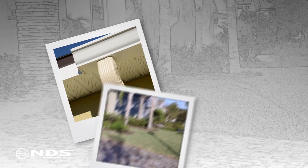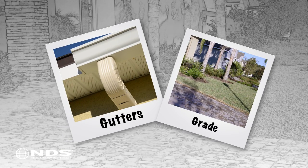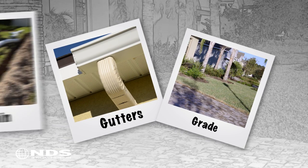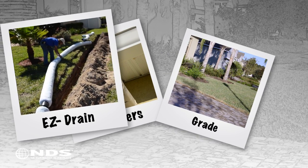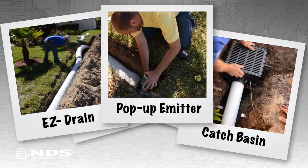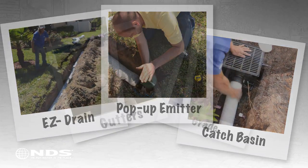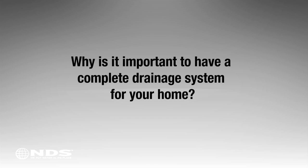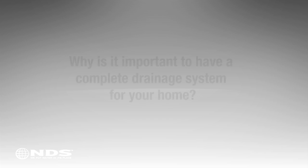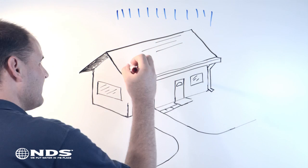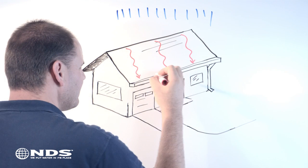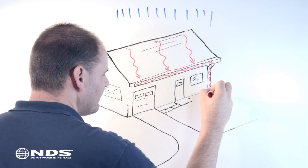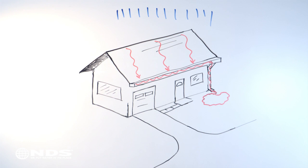Many homes may already have rain gutters or proper grading, which are the beginnings of a drainage system that can be easily added to, to create a complete drainage system for your home. When rain falls on the roof of your home, it is collected in the rain gutter and is carried to the gutter downspout.